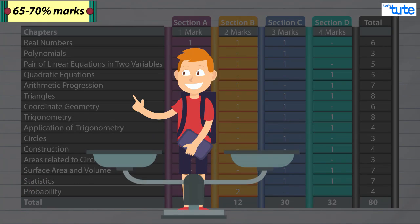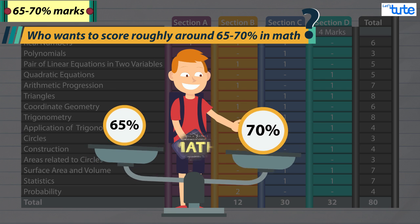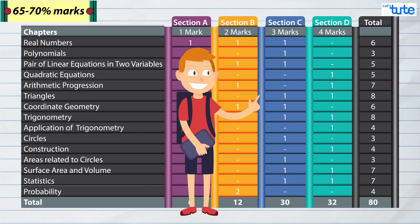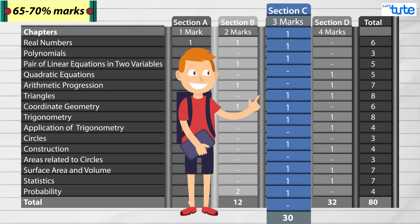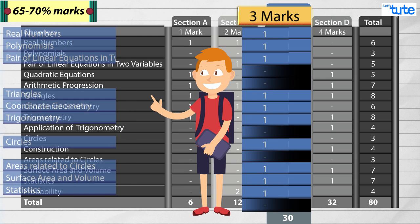Now let's move to the students who want to score roughly around 65 or 70% marks in math. If we see in section C, there are 10 questions of 3 marks each and the questions are asked from these chapters.